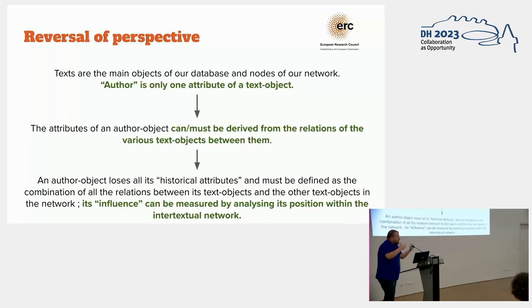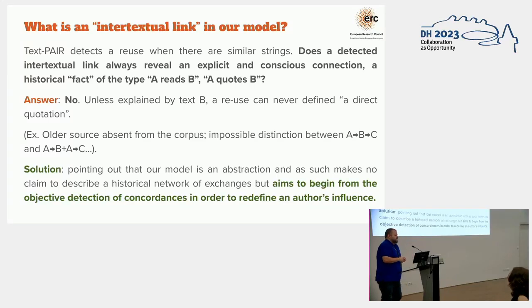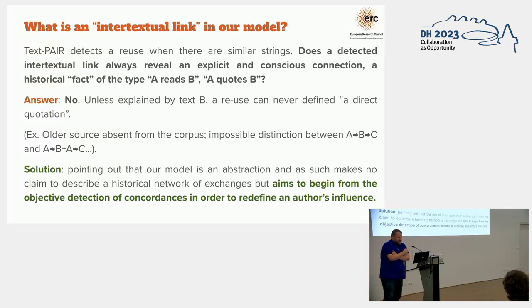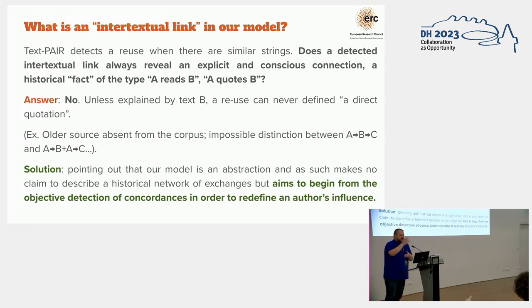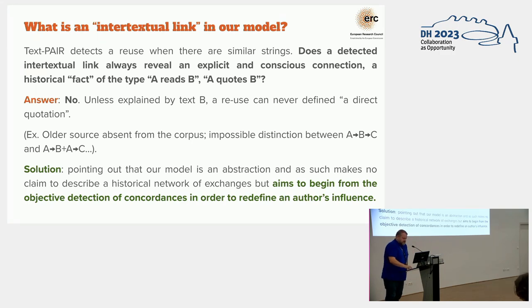Attributes of an author object are then derived from the relations between various text objects. The idea of influence — how an author behaves in the network as a node — can help us think about influence. As for what a link or edge is, this is very important. The whole filtering of noise was important because when we draw an edge, we want to be sure it's a real text reuse — an actual literary use, not just a repeated passage. But this also means you can't make assumptions about intentionality. There's no way of saying A read B and then quoted C, because you don't really know — there could always be a third text that predates it. Our model is an abstraction and a way of thinking about how the texts behave and how authors may relate to each other.